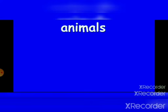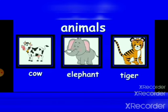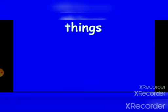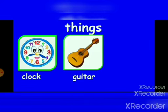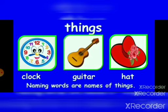Animals — cow, elephant, tiger. Naming words are names of animals. Things — clock, guitar, hat. Naming words are names of things.